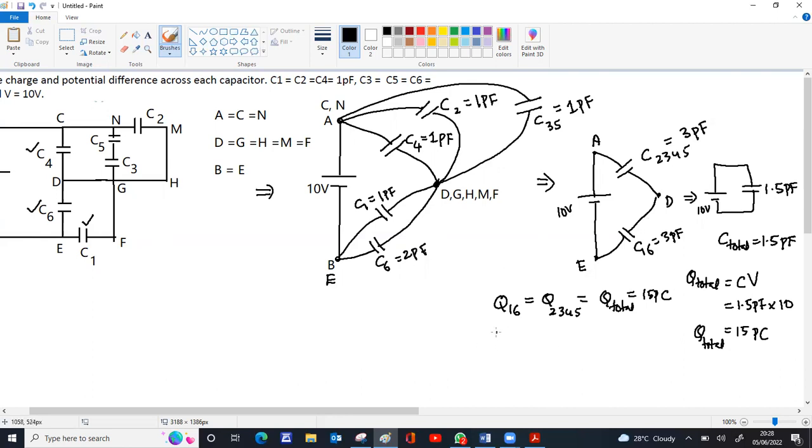From this we can find V16. V16 is Q16 by C16, 15 into 10 to the minus 12 by C16. C16 is 3 into 10 to the minus 12. This will give you 5 volt. Since C1 and C6 are parallel, V1 will be equal to V6, will be equal to V16, that will be 5 volt.